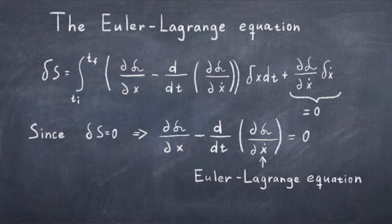Thus we obtain our equation of motion: the derivative of the Lagrangian with respect to the position minus the time derivative of the derivative of the Lagrangian with respect to the velocity equals zero. This is called the Euler-Lagrange equation. You can use this to obtain the equation of motion by plugging in the Lagrangian for the system and solving. The Euler-Lagrange equation is actually equivalent to Newton's second law, F equals ma.